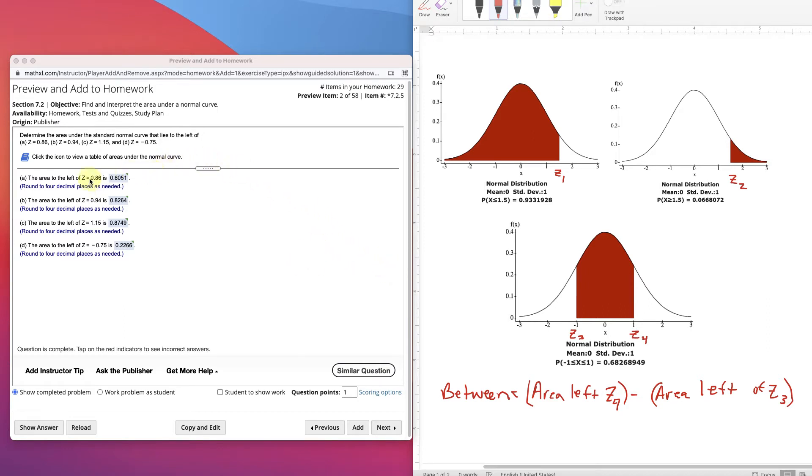Alright, let's look at this first problem, 0.86. It says the area to the left of that we want to find. Okay, well what does that mean? Well here I have three examples.